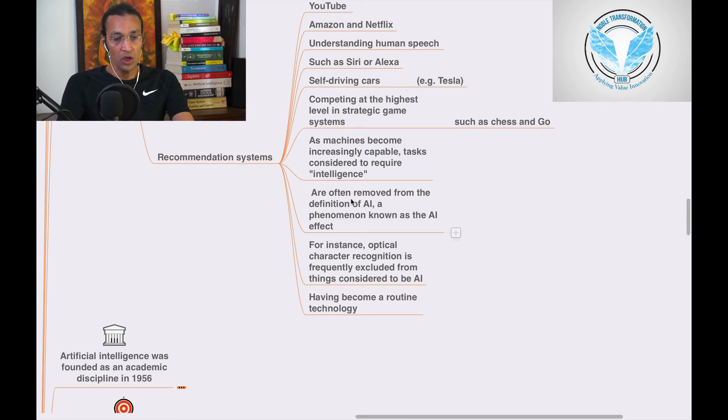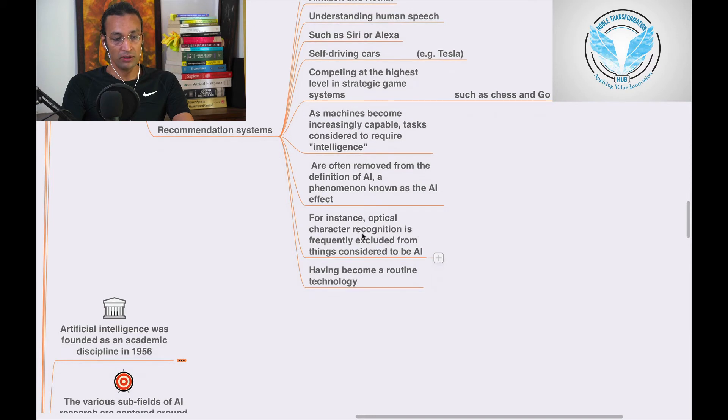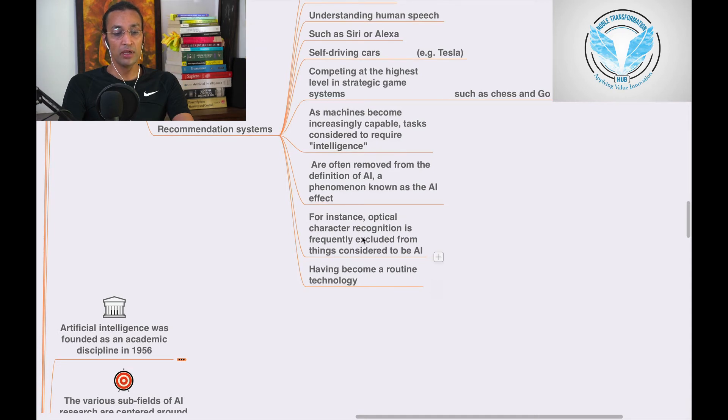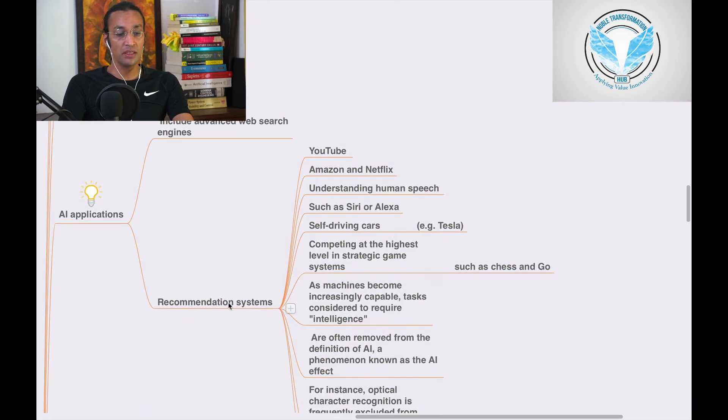Often removed from the definition of AI is a phenomenon known as the AI effect. For instance, optical character recognition is frequently excluded. Things once considered to be AI have become routine technology, like YouTube, Amazon, Netflix, Siri, Alexa, self-driving cars, and many other algorithms.